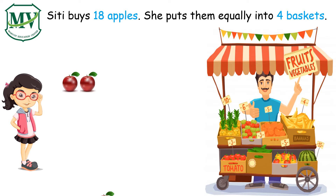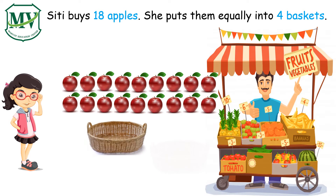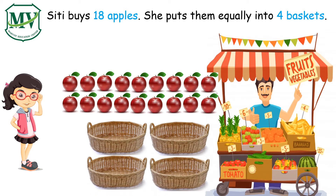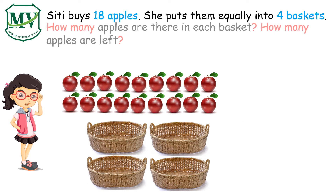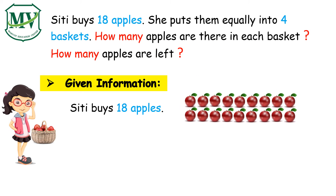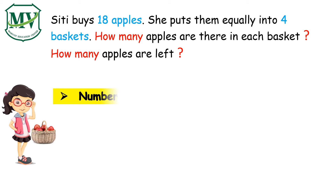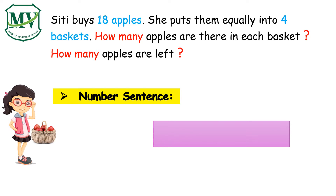The question is: how many apples are there in each basket, and how many apples are left? We understand that City buys 18 apples and she puts them equally into four baskets. What do you think is the number sentence of this problem? Very good! The number sentence is 18 divided by 4 is equal to blank.